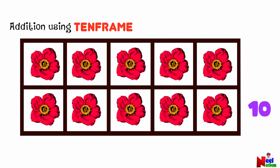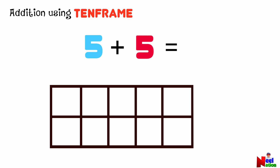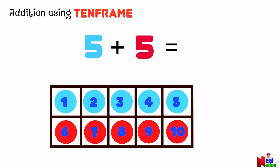Now, let's add using the ten frame. Can you tell me what is five plus five? Let's begin by placing five counters in the ten frame starting from the first row. Now let's add five more to the ten frame. Let's add all the counters together — there are ten in total. Which means five plus five is ten.